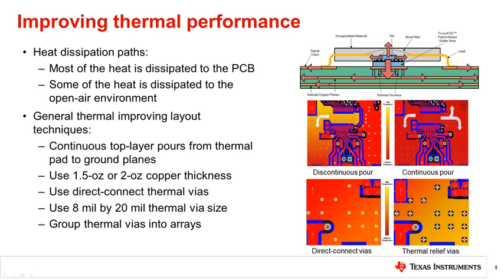Another technique to improve thermal dissipation is to use 1.5 or 2 ounce copper pour or plating thickness. Increasing the plating thickness reduces the effective thermal resistance, which increases the thermal conductivity of the copper. Another technique is to use direct connected thermal vias instead of thermal relief vias — direct connect vias allow for the lowest possible thermal resistance between the via and copper layers, achieving lower temperatures. Lastly, it is recommended to use a minimum 8 mil hole size by 20 mil diameter thermal vias directly beneath the thermal pad for optimal heat conductivity. Group the thermal vias into arrays near regions of high heat concentration, such as the thermal pad and regions near the IC.